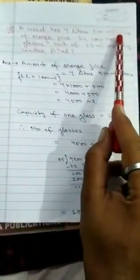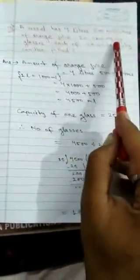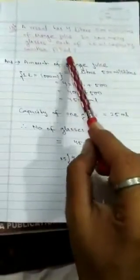Next question, question number 10. A vessel has 4 liter, 500 milliliter of orange juice. In how many glasses, each of 25 ml capacity can it be filled?